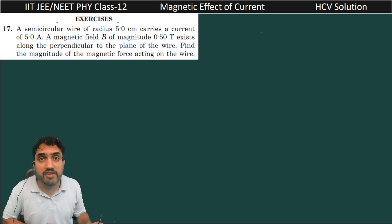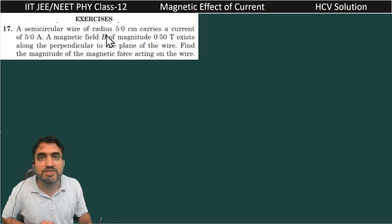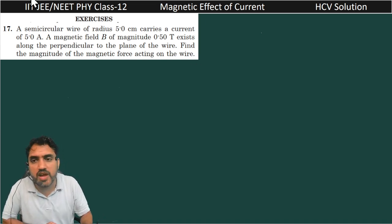Hello my dear students. Now we are having the next question, question number 17: A semicircular wire of radius 5 centimeters carries a current of 5 amperes. A magnetic field B of magnitude 0.5 Tesla exists along the perpendicular to the plane of the wire. Find the magnitude of the magnetic force acting on the wire.